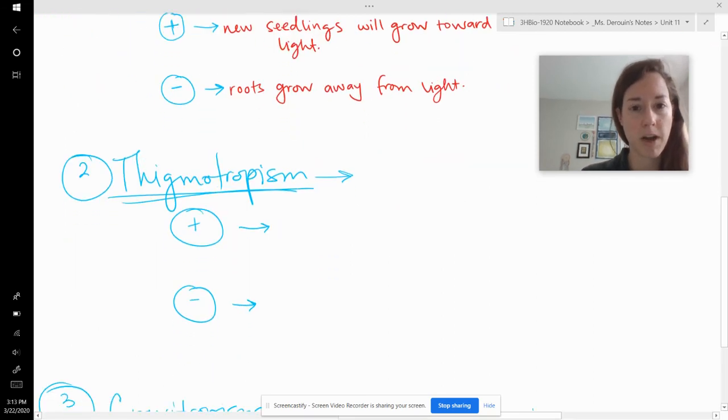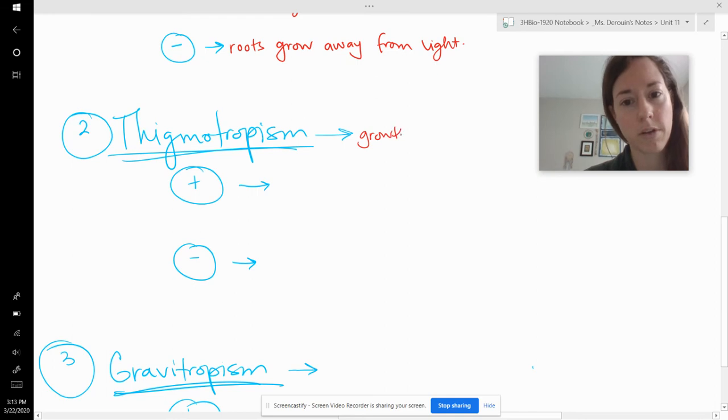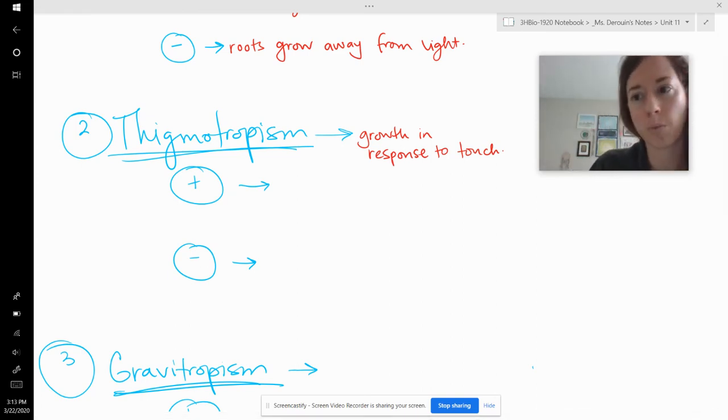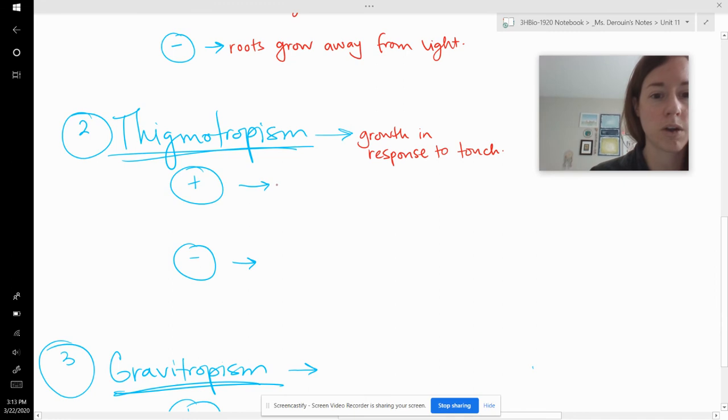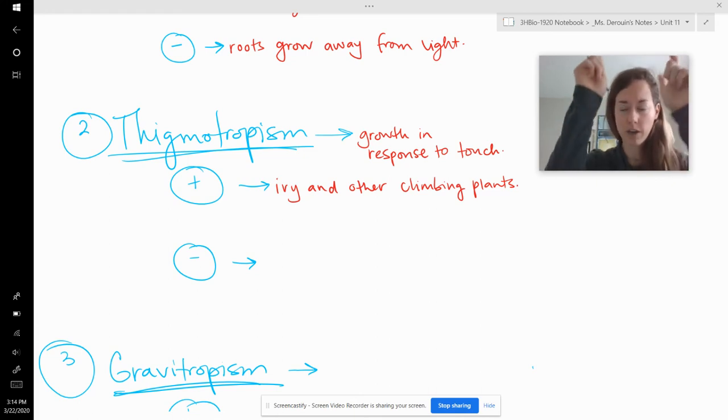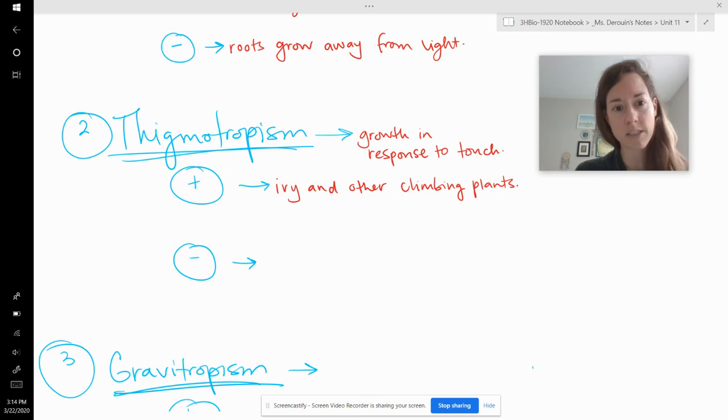Thigmotropism is response to touch. Growth in response to touch. So an example of this is ivy and other climbing plants will grow up against a surface and they like to be touched. So they'll grow continuing to touch the wall or the pole or whatever it is they're growing on. So I'll say ivy and other climbing plants. We watched that video about plants, the life episode about them. And it showed the climbing plants with the little hooks that would hook on and climb up to the tops of the trees. That's an example of thigmotropism too.